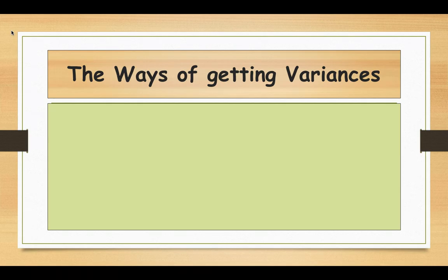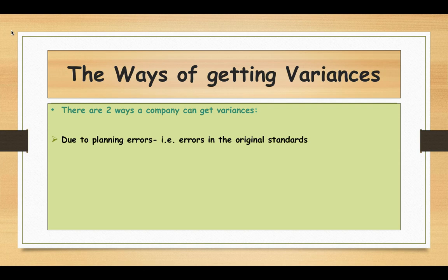Companies usually compare the actual performance with the standards in order to extract the variances. There are two ways a company can get variances. The first one is due to planning errors, i.e. errors in the original standards. Variances may arise due to planning errors, inaccurate planning, or any change that was not anticipated at the time when they were preparing the forecast, which may lead to wrong standards being set.